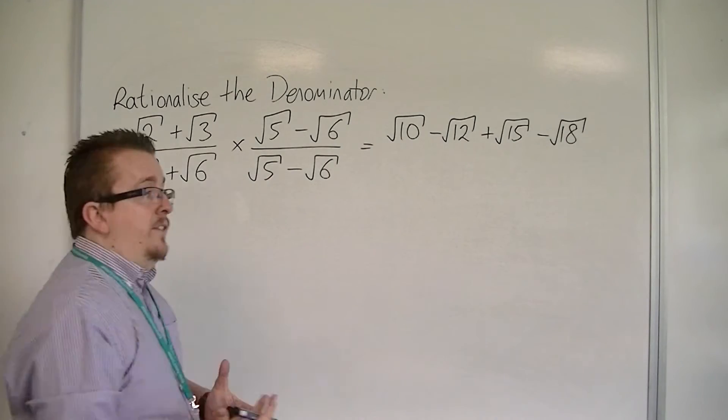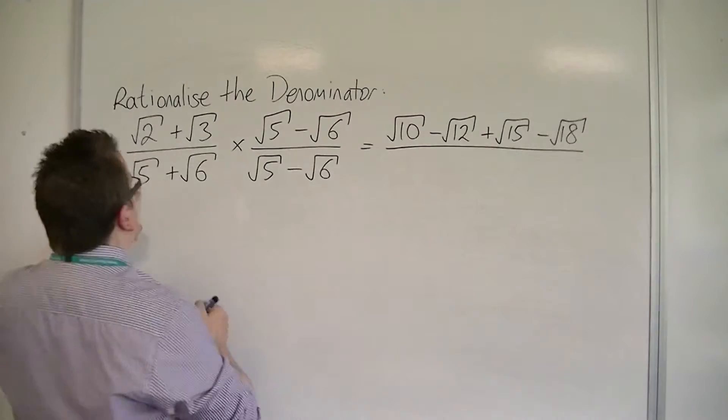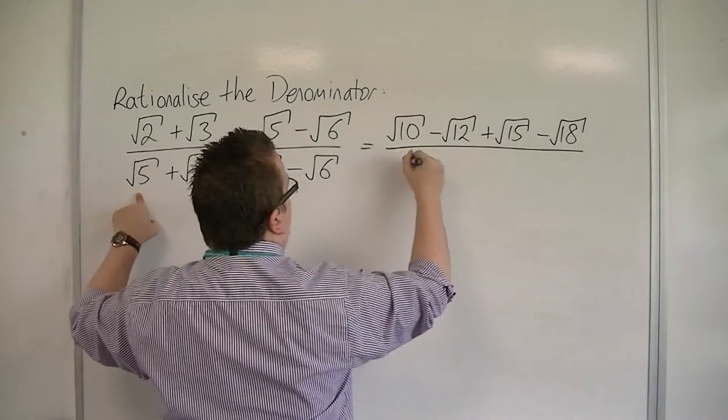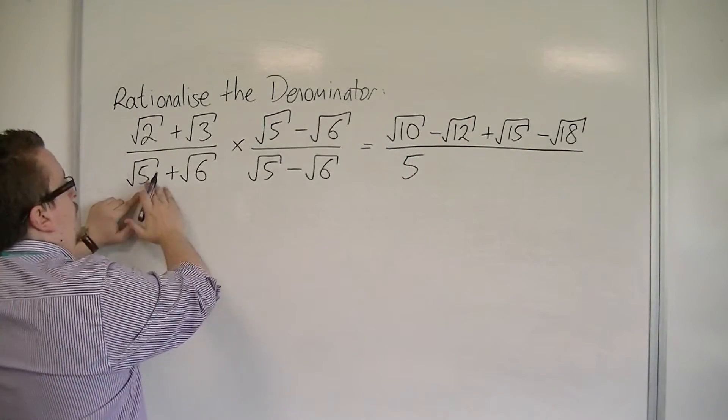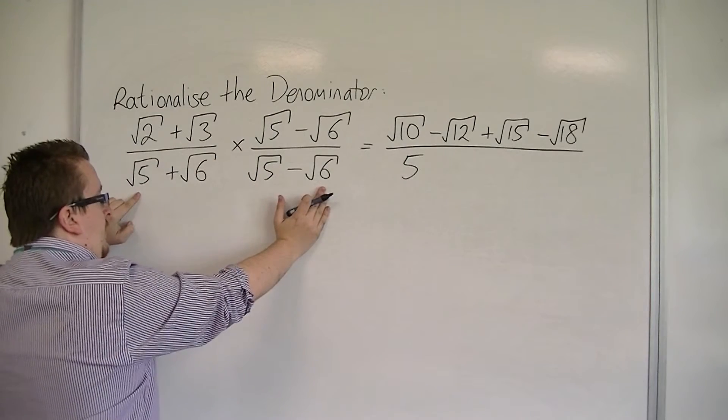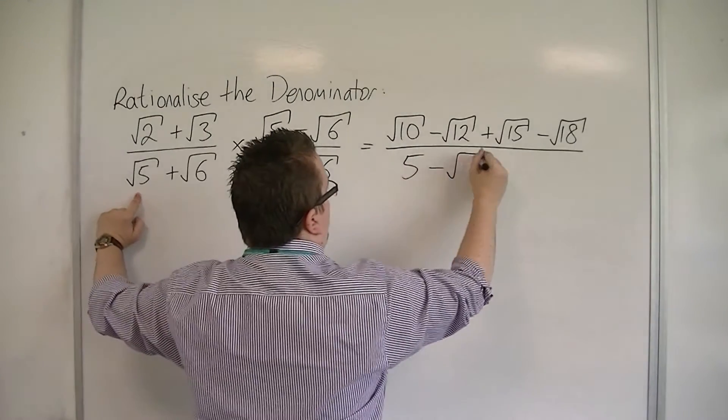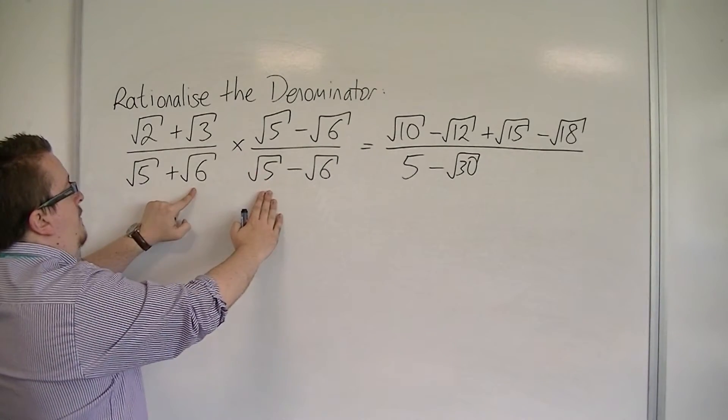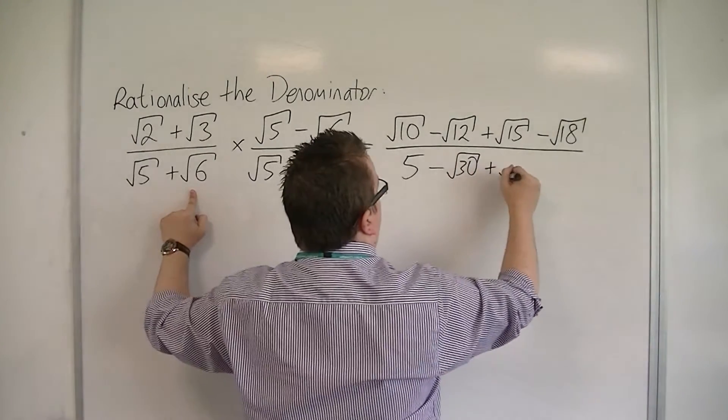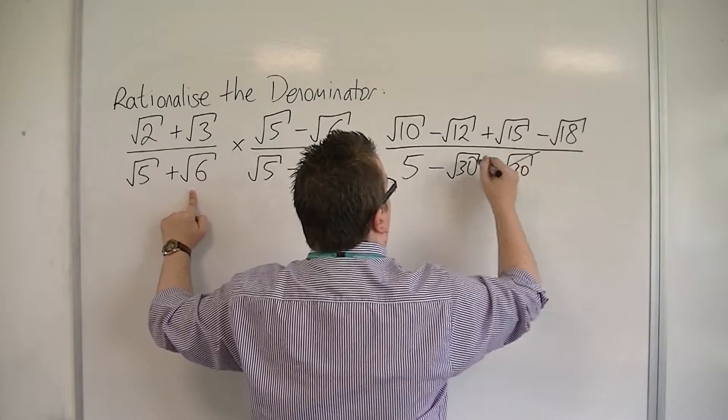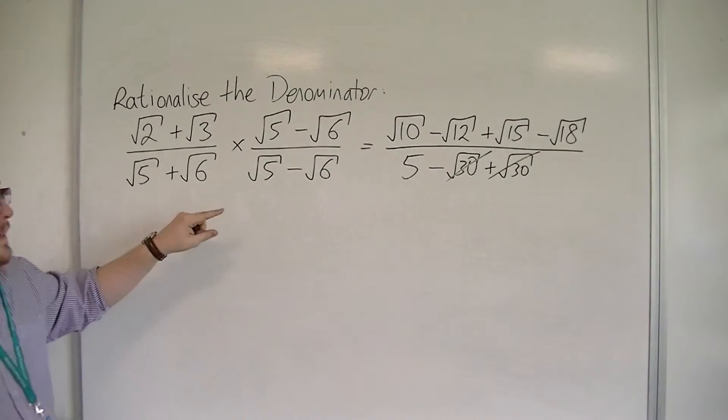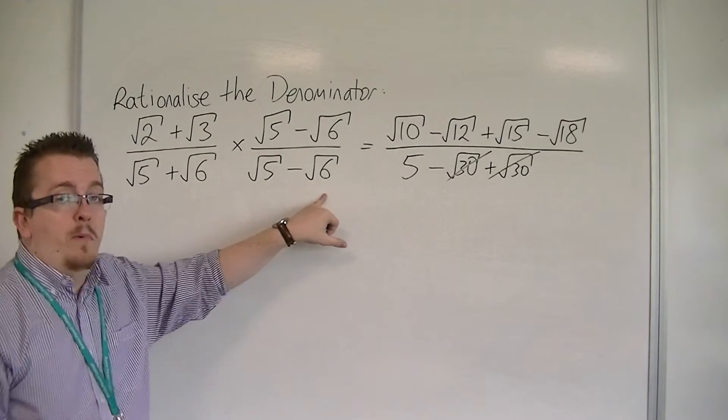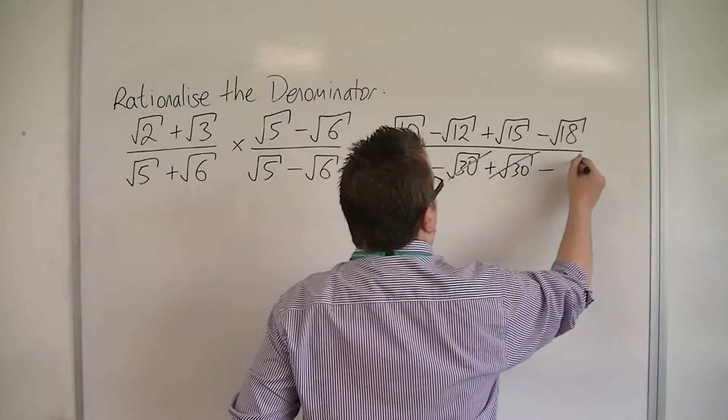For the denominator, I have root 5 times root 5, which is 5. I've got root 5 times minus root 6, which is minus root 30. And then I've got root 6 times root 5, which is plus root 30. So you can see those bits cancel each other out. And then I'm left with root 6 times minus root 6, which is just minus 6.